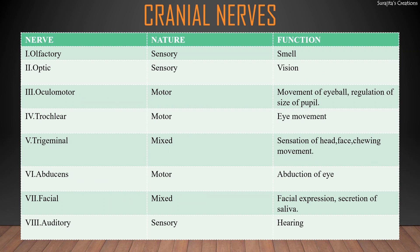Let us learn the names of the cranial nerves, their nature, and their functions. Cranial nerves send information between the brain and the sense organs. Each nerve has a name that reflects its function and a number according to its location in the brain. The first cranial nerve is the olfactory nerve; it is sensory in nature and is concerned with the sense of smell.